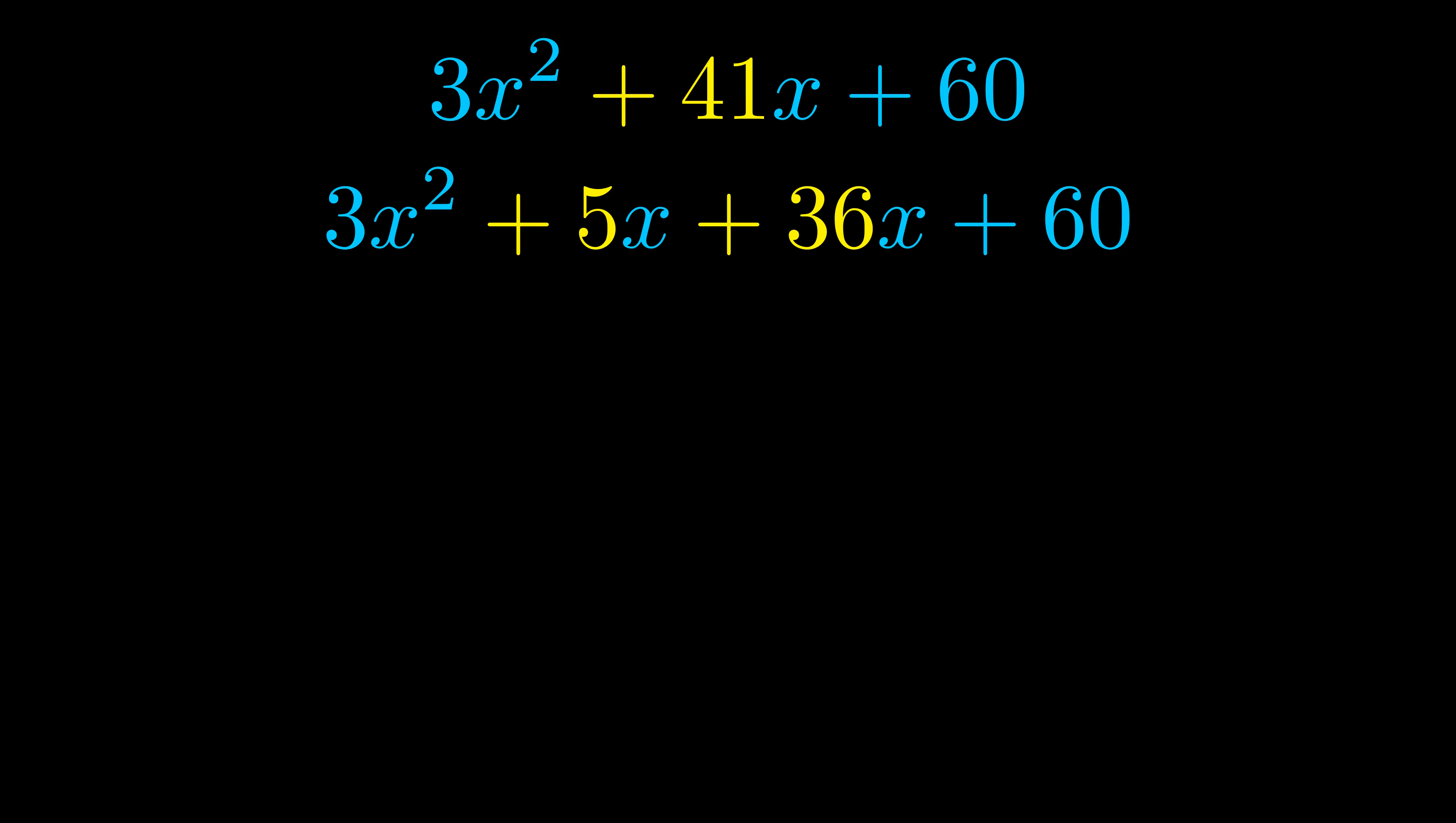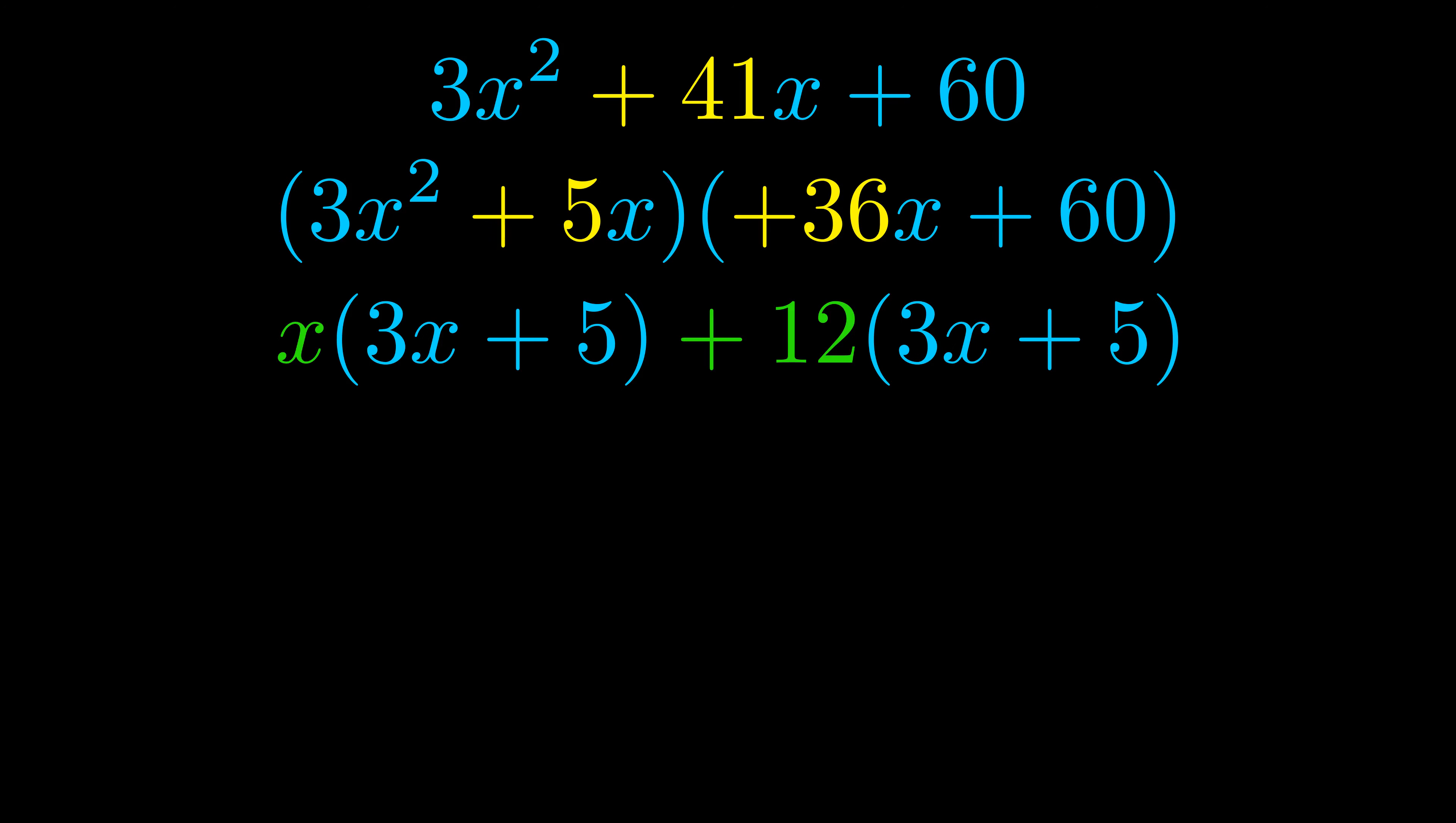Once we've done this, we go ahead and we put parentheses around the first term and the last term, and we do that so that we can take the greatest common factor out of both terms. We can see the greatest common factor is now outside in green. Notice also how what remains inside of the parentheses is the same in both cases.